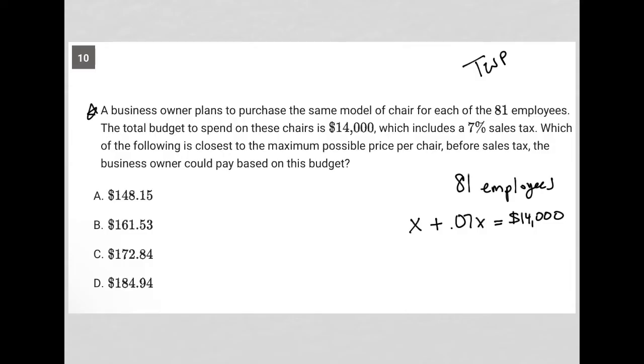Which of the following is closest to the maximum possible price per chair before sales tax the business owner could pay based on this budget? So a couple of ways to answer this question. First of all, X represents the price of all 81 chairs. So X divided by 81 would be the price per chair that we're looking for.